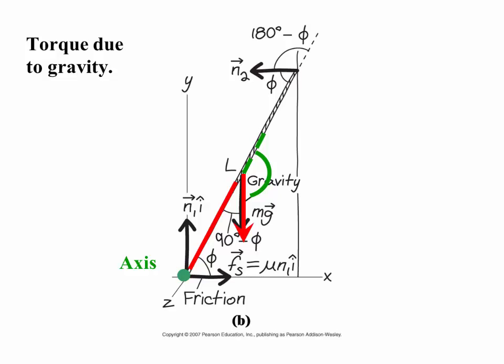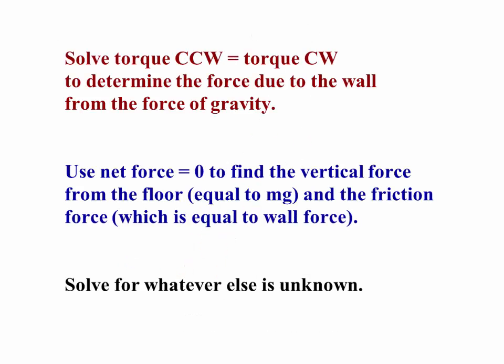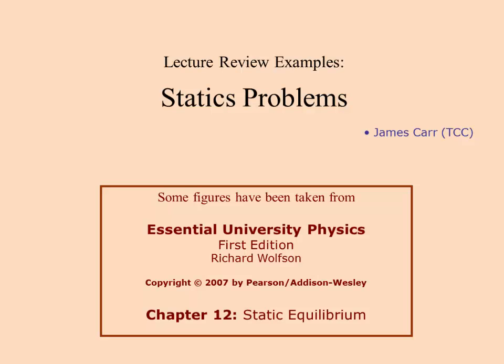Torque due to gravity is clockwise. Here, the angle between L over 2 actually and the force of gravity is 90 minus the angle of the ladder, and so we'll use the lever arm L over 2 times mg times the sine of 90 minus phi. Solve torques counterclockwise equal torques clockwise. Determine the force due to the wall from the force of gravity. Then, use net forces equal zero to find the vertical force from the floor. These are problems that I work in class. This is not really meant to replace what I do in class, but merely provide a review example using examples and problems and figures taken from our textbook.